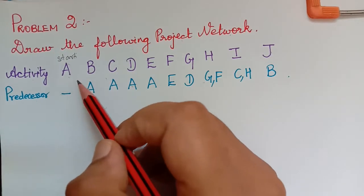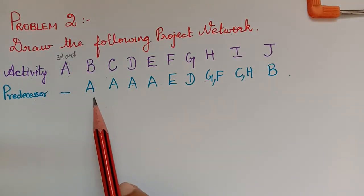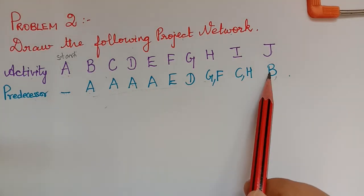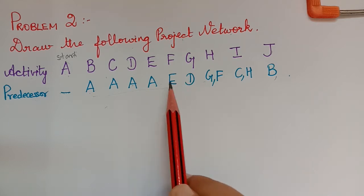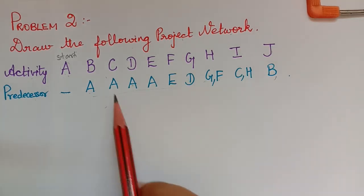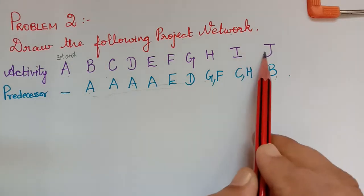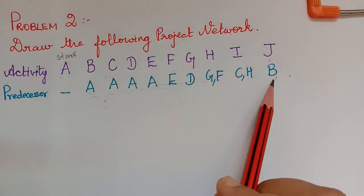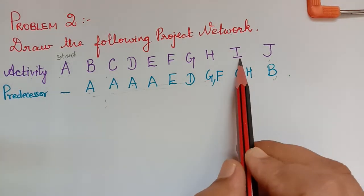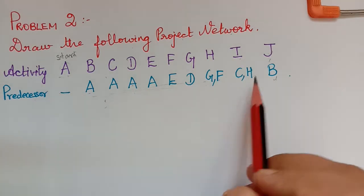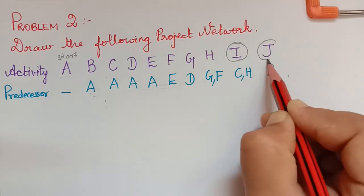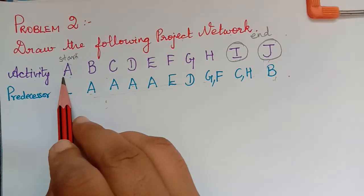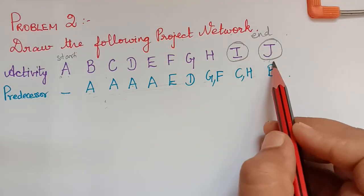Next, we have to decide the ending activity, for which we check which activity is not a predecessor to any other. The activities are A through J. If we check the predecessor list, we don't find activity I or activity J listed as predecessors, which means both activity I and activity J are the end activities.